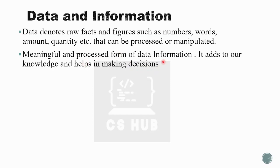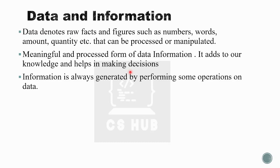So, what is data? Data is raw facts and figures. What is information? It is a processed form of data or meaningful form of data. Meaningful and processed form of data is known as information. It adds to our knowledge and helps in making decisions.